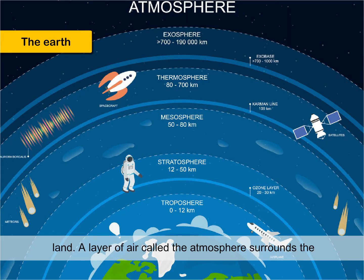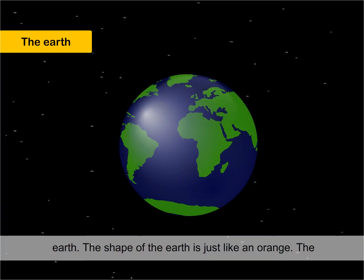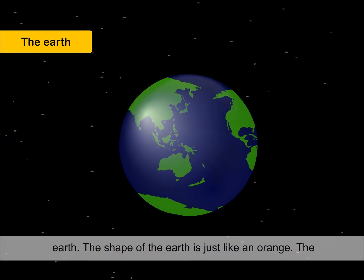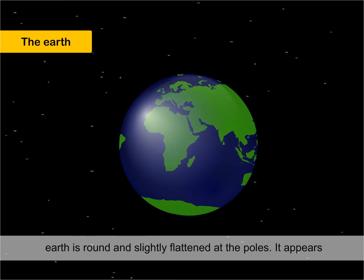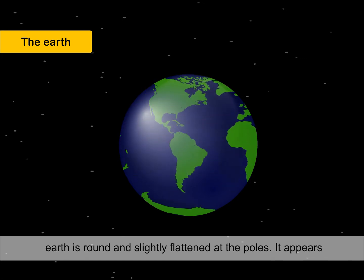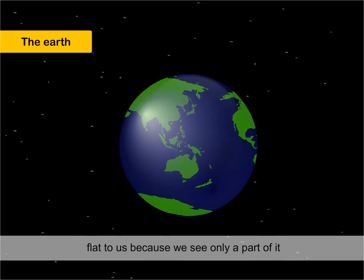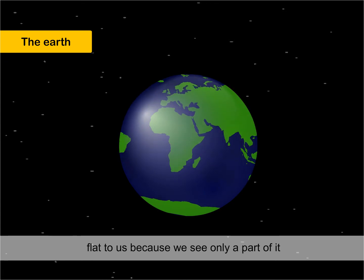A layer of air, called the atmosphere, surrounds the Earth. The shape of the Earth is just like an orange. The Earth is round and slightly flattened at the poles. It appears flat to us because we see only a part of it.